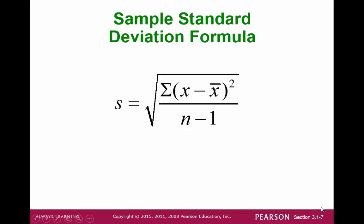Working from the inside out, we begin with the idea that we need to find the mean, x-bar. We find the distance between each value and the mean — that's x minus x-bar. We square each of these distances and we add them all up. We divide by n minus 1 to get something that might look like the average. And finally, since we squared each of the distances, we take the square root in the end.